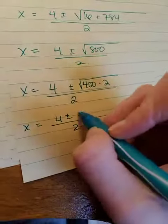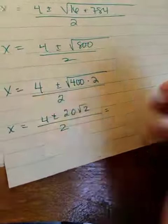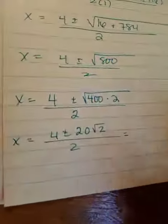All right, so we simplify. What's the square root of 400? 20 root 2. Okay, that's great. You basically have the answer. Now you just have to simplify.